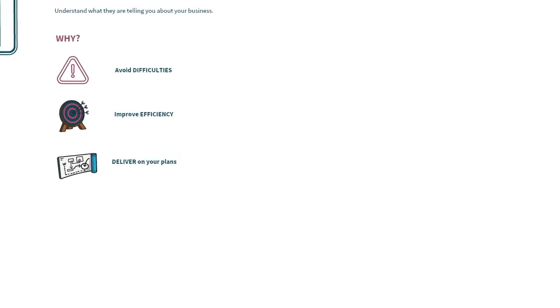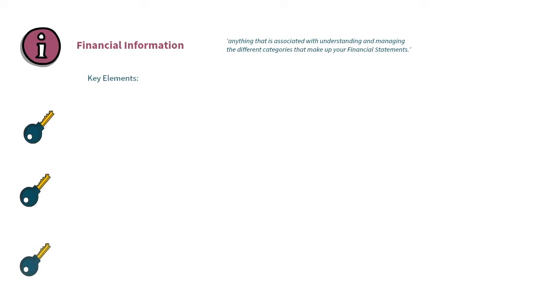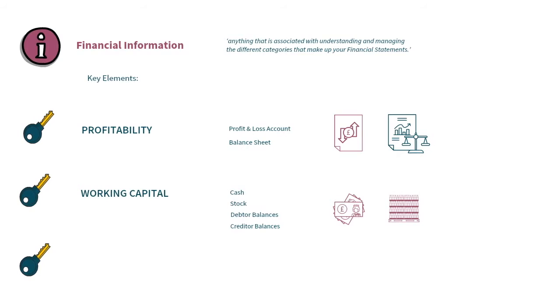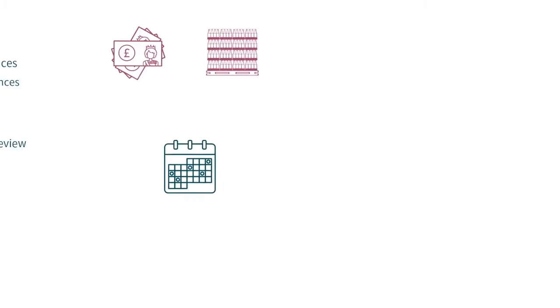We define financial information as anything associated with understanding and managing the different categories that make up your financial statements. We'll provide specific advice on how to manage the key elements of your business, namely profitability, the profit and loss account and balance sheet, working capital — so cash, stock, debtors and creditors — that you hold in order for your business to actively trade, and other elements for annual review. We want to give you confidence that you know the things you should be managing on a regular basis throughout the year.